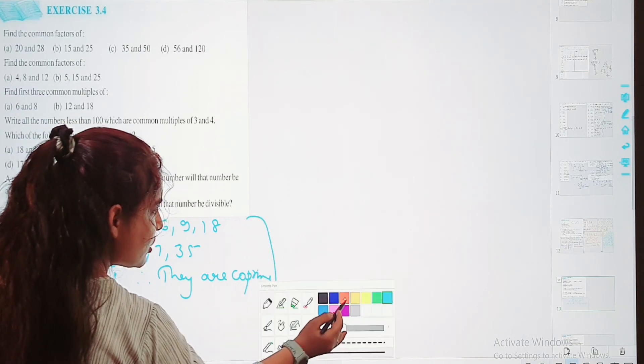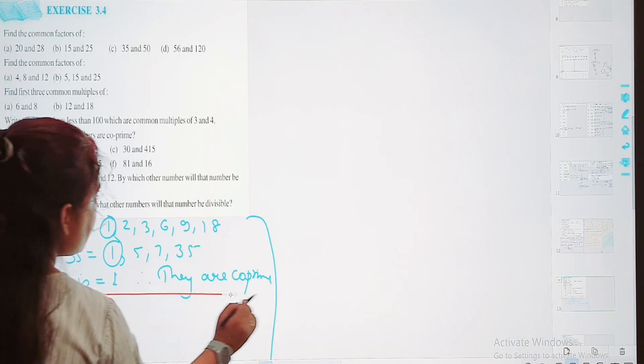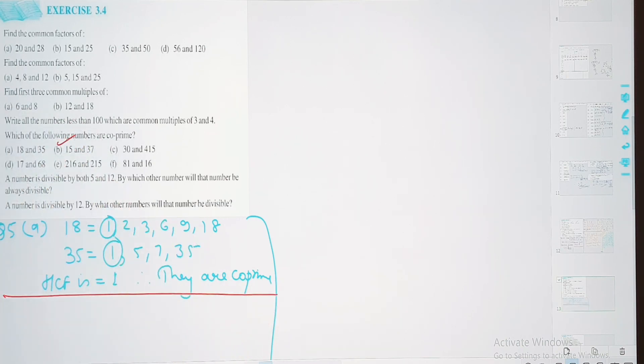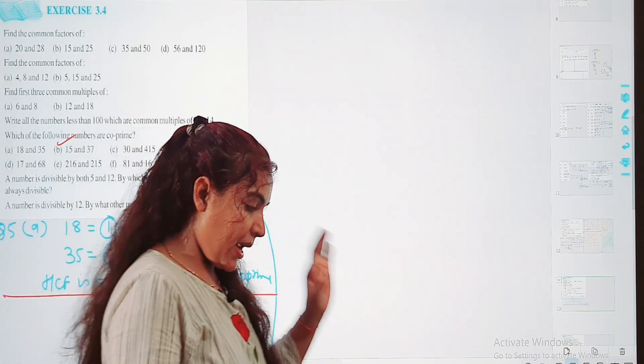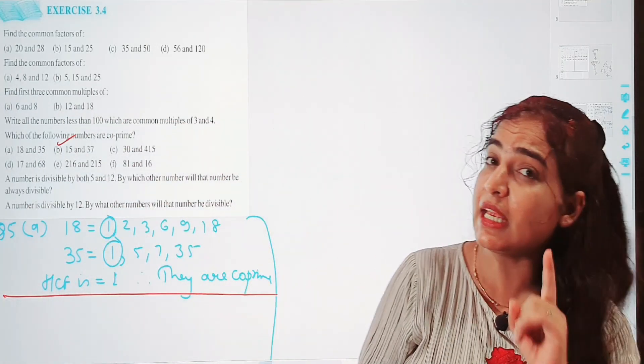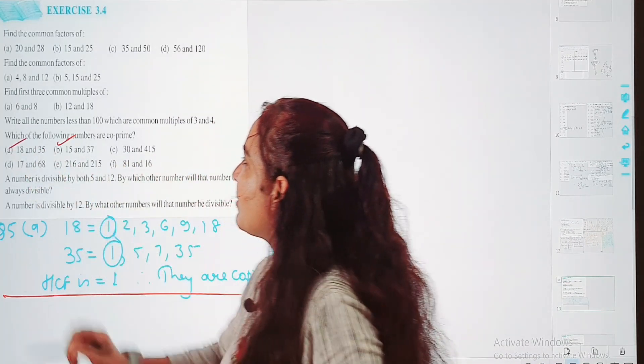Next question. 15 or 37, isme bhi aapka srif 1 hai, 1 hi hai jo highest common factor hai. Kyunki 37 aapka prime number hai aur 15 aapka composite number hai. Composite or prime number me ekhi cheej common hooti, ekhi number common hooti hai, aur wo hai 1. Tho ye bhi aapka co-prime number ho gya.